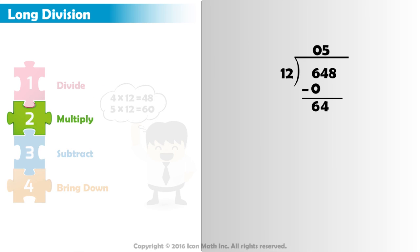Next, we multiply. 5 times 12 equals 60. Then we subtract. 64 minus 60 equals 4. Now, we bring down the last digit from our dividend. Bring down the 8.